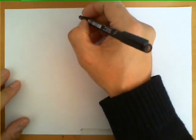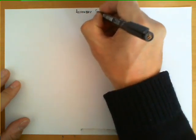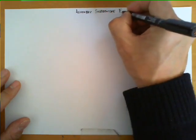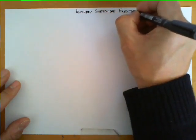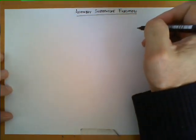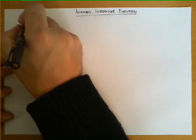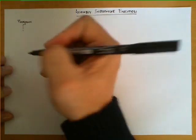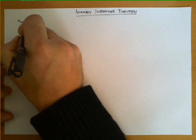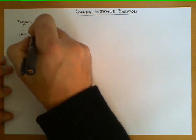In this video we're going to explain how an assembly subroutine executes. We're going to suppose that we are executing a regular assembly program that is calculating certain things, executing different instructions, and at some point it invokes the instruction CALL subroutine.